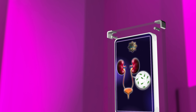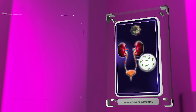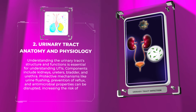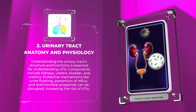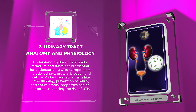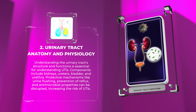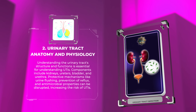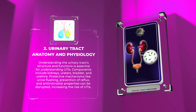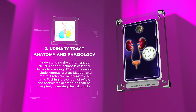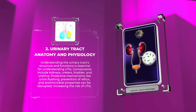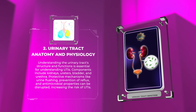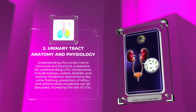Understanding the urinary tract structure and functions is essential for understanding UTIs. Components include kidneys, ureters, bladder, and urethra. Protective mechanisms like urine flushing, prevention of reflux, and antimicrobial properties can be disrupted, increasing the risk of UTIs.